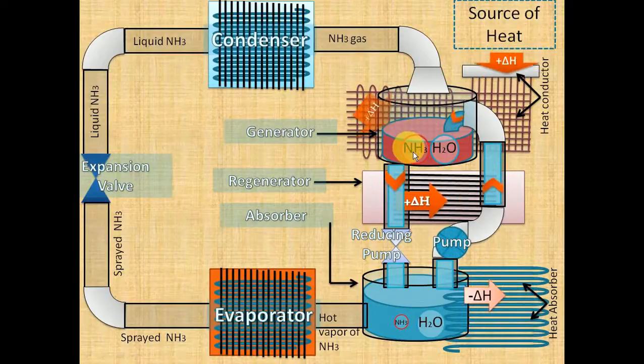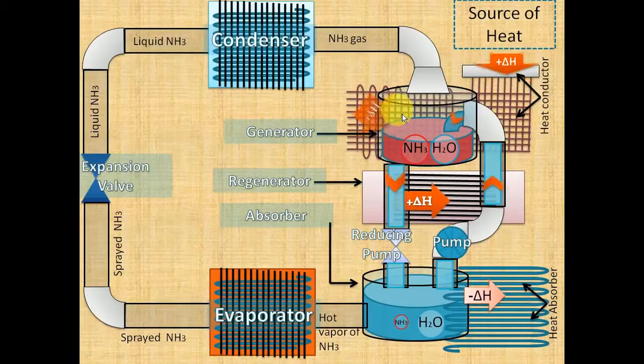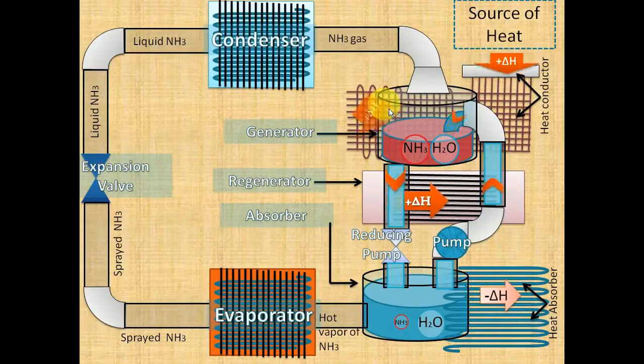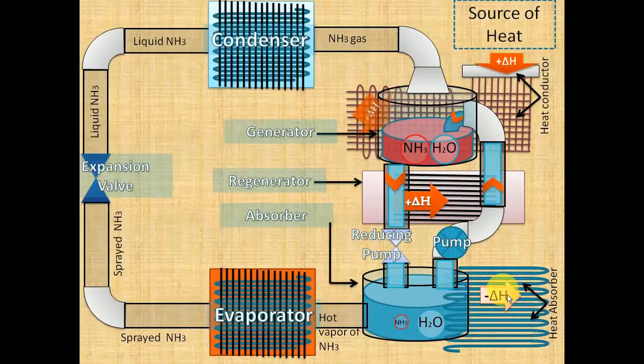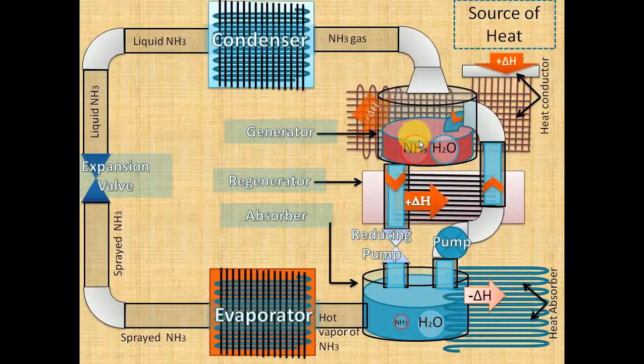You must have noticed the arrows carrying delta H. Positive delta H indicates the absorption of heat. Negative delta H indicates the releasing of heat. The circle of ammonia in the generator is bigger than the circle in the absorber.